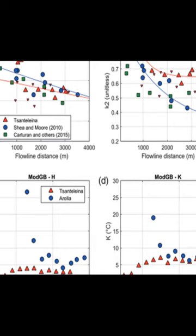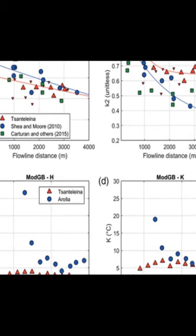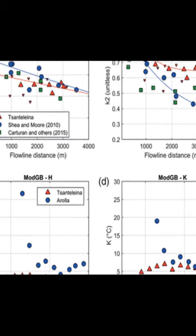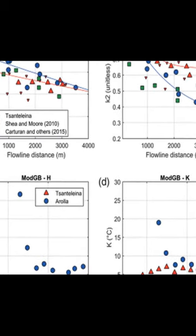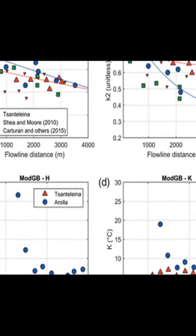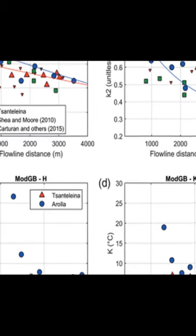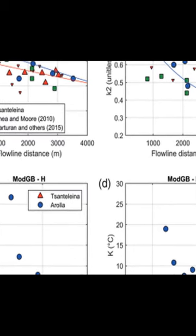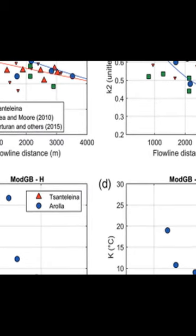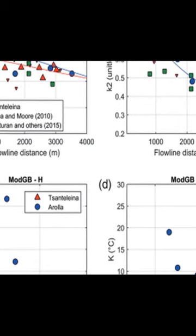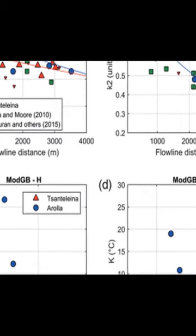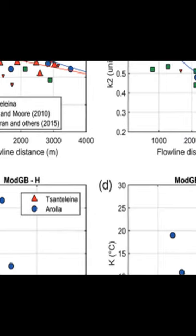Temperature distribution methods improved simulation of melt rates in an energy balance model by up to 36%, compared to the environmental lapse rate extrapolated from an off-glacier station.